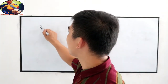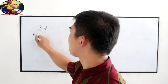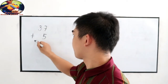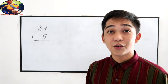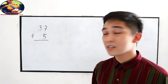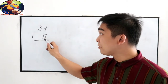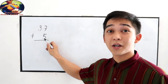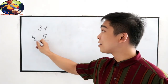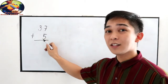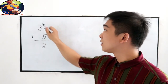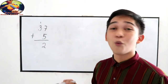Let's say we have 37 plus 5. So that is 7 plus 5. We need to add those numbers in our 1's place. 7 plus 5, that is 12. So we need to carry 1.